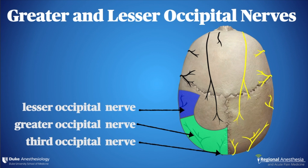The greater occipital nerve arises from the second cervical nerve root that emerges between the atlas and the axis. The greater occipital nerve is most often located immediately medial to the occipital artery, and provides continuous innervation to the major portion of the posterior scalp from the level of the external occipital protuberance to the vertex.